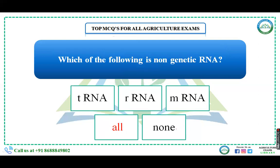Which of the following is non-genetic RNA? There are two types of RNA: genetic RNA and non-genetic RNA. Non-genetic RNA performs functions other than transferring characters from one generation to another. The options tRNA, rRNA, and mRNA are all non-genetic RNA — they are involved in protein synthesis rather than carrying genetic information between generations.